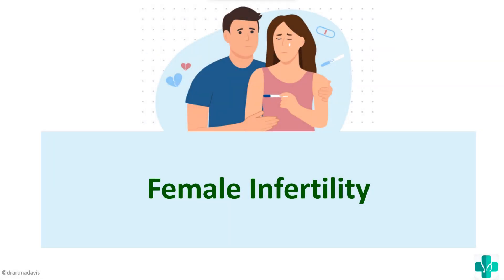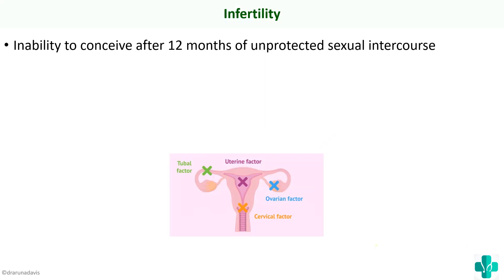In this video we're going to see about infertility, especially female infertility — what are the causes as well as investigations to diagnose female causes of infertility. First of all, the definition: infertility is the inability to conceive even after 12 months of unprotected sexual intercourse. If the couple is unable to conceive after one year, it is called infertility. Now I'll show a flowchart of how normal fertilization occurs.